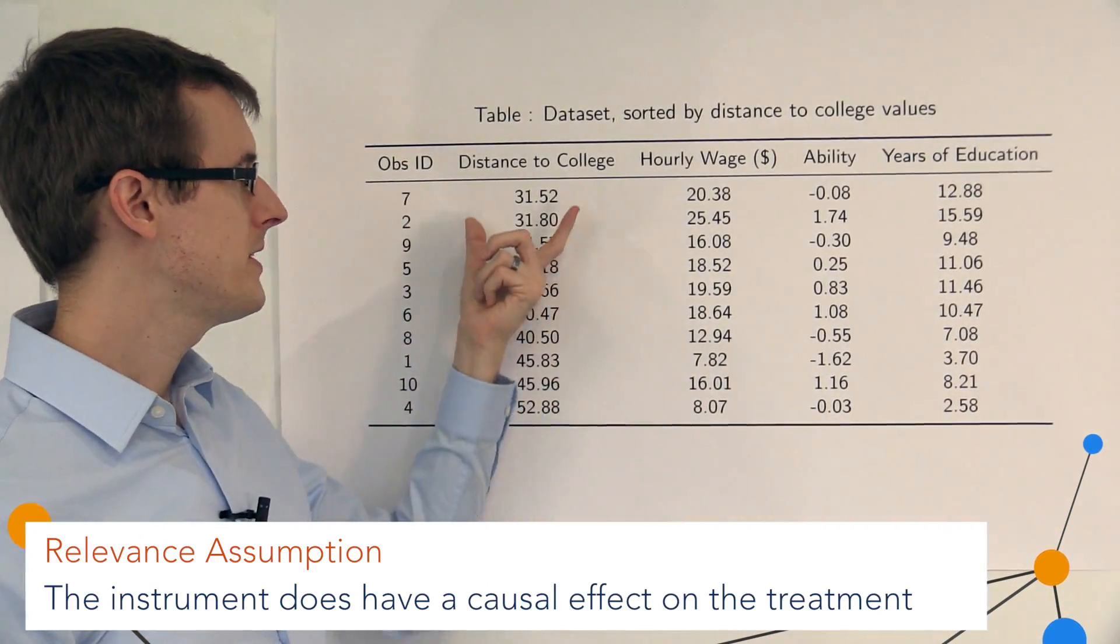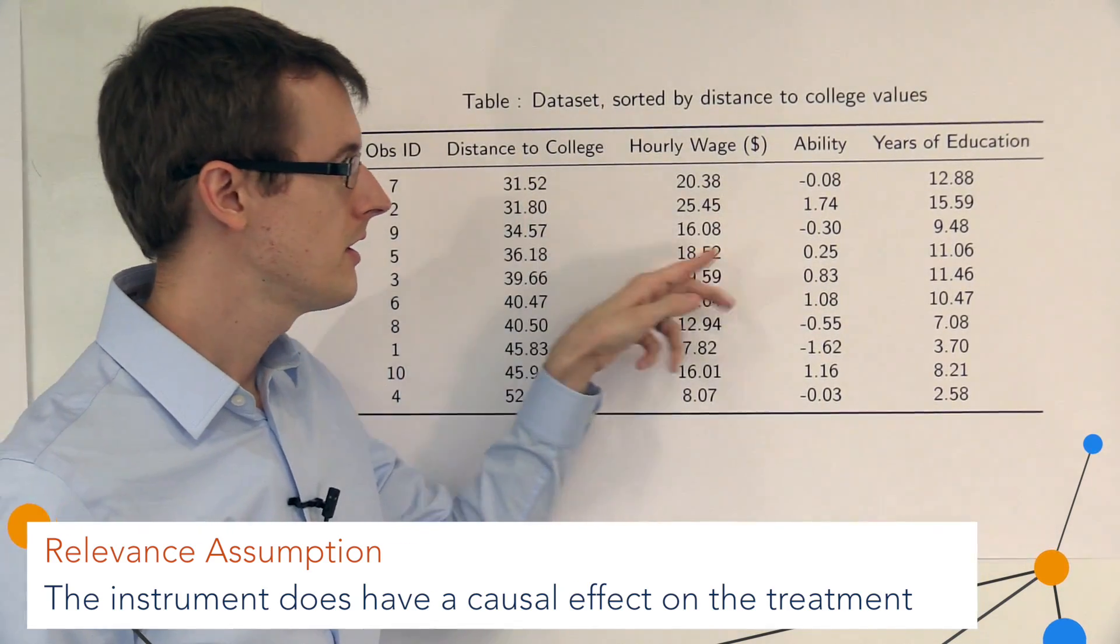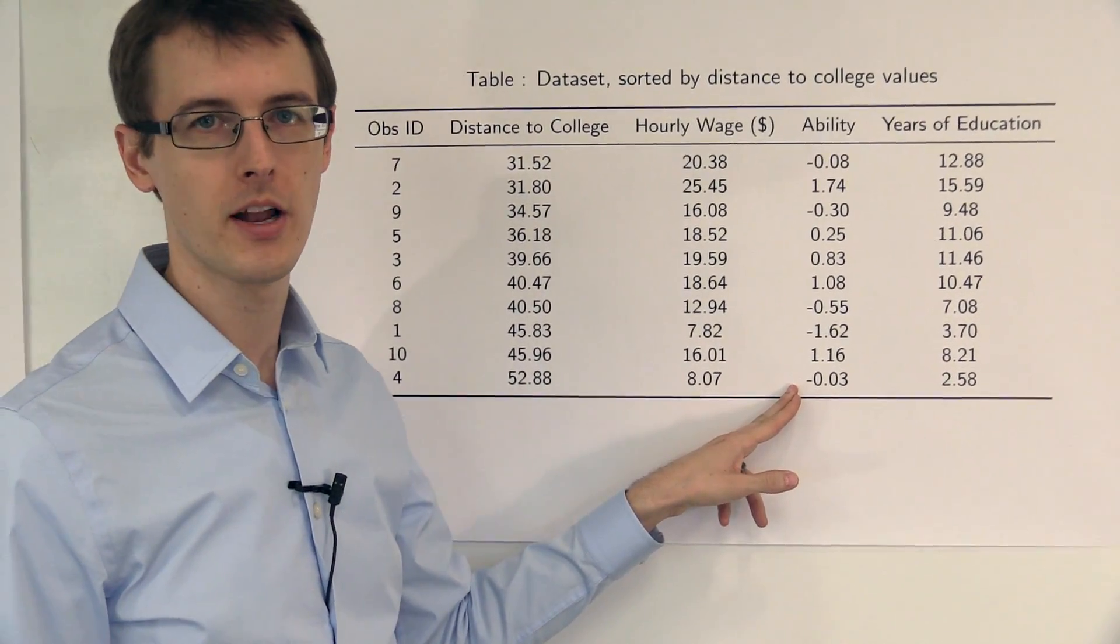And finally, we see that people who live close to college have about the same ability as people who live far from college. There doesn't seem to be a relationship between ability and distance to college.